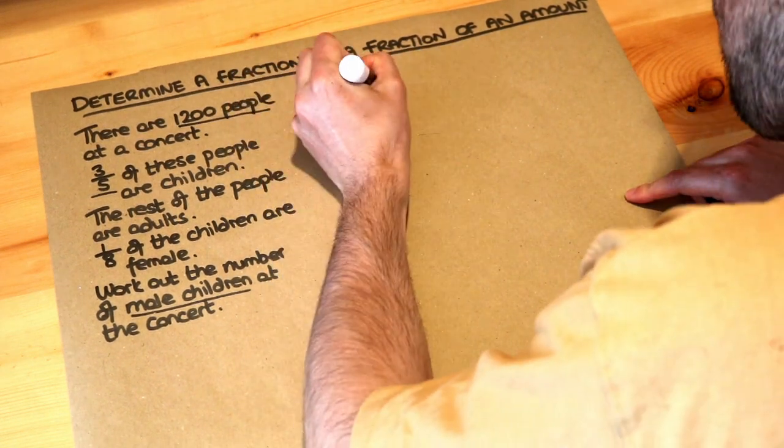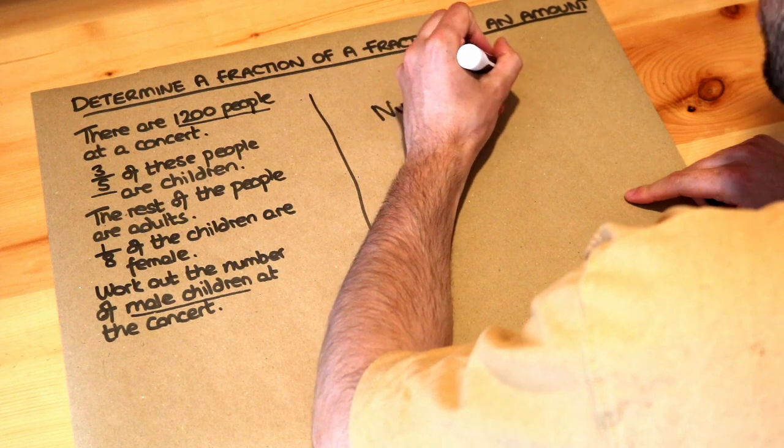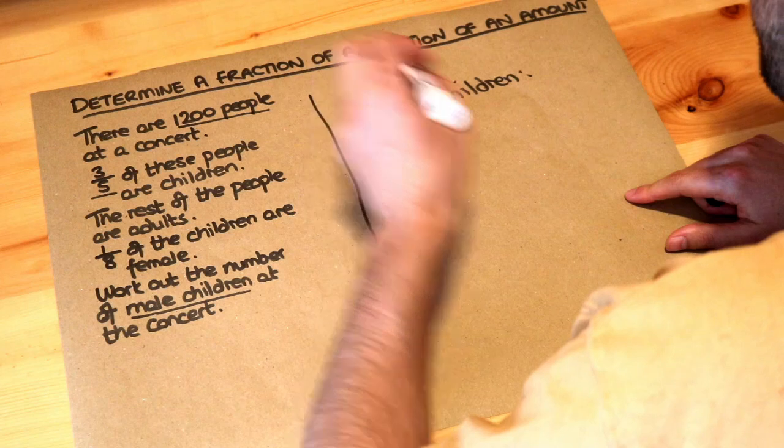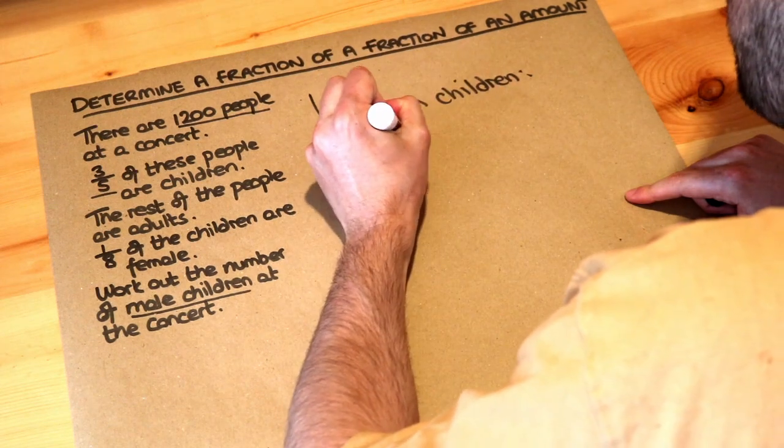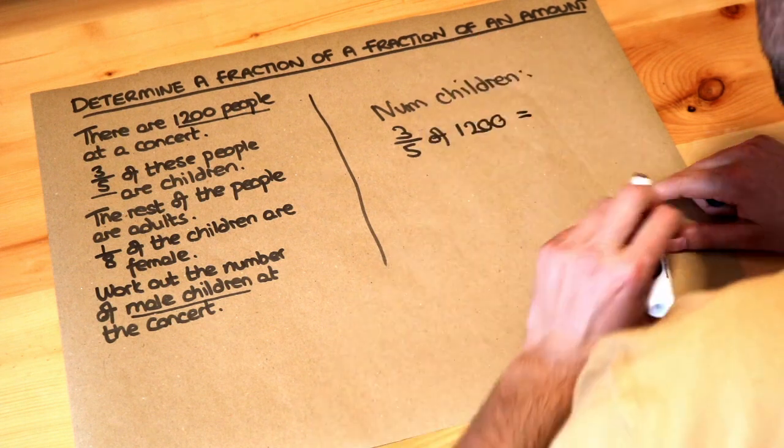So number of children we're told is three-fifths of the people, three-fifths of the 1,200. So three-fifths of 1,200 and remember how you found a fraction of an amount?